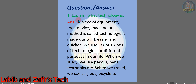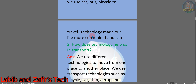Question number one: explain what technology is. Answer: a piece of equipment, tool, device, machine, or method is called technology. It made our work easier and quicker. We use various kinds of technologies for different purposes in our life. When we study, we use pencils, pens, textbooks, etc. When we travel, we use car, bus, bicycle. Technology made our life more convenient and safe.